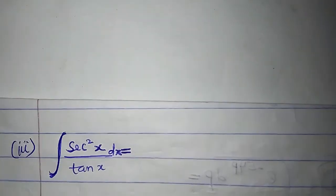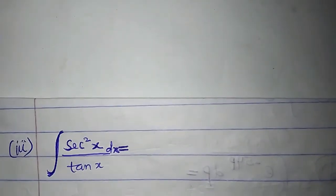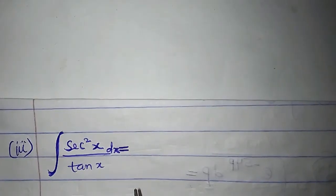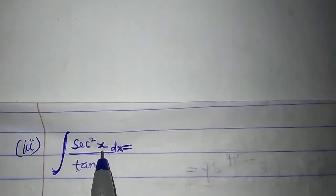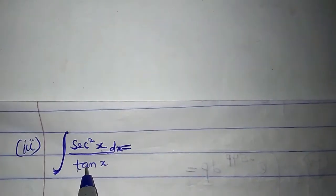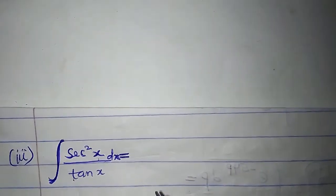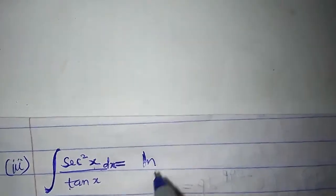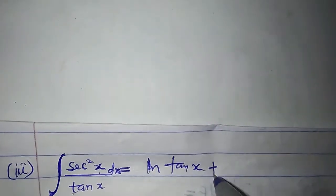What is the integral of sec squared x all over tan x with respect to x? If I differentiate tan x, I obtain sec squared x. That means the derivative of the denominator is what is in the numerator, so the integral is equal to ln of tan x, plus c.